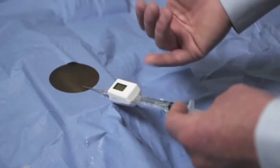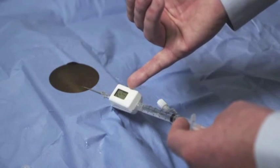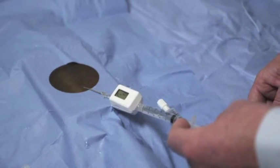After the saline is infused, simply read the compartment pressure. In this instance, we see a pressure of 17 to 18 millimeters of mercury.